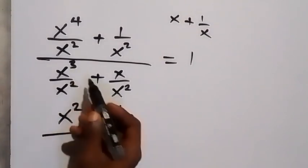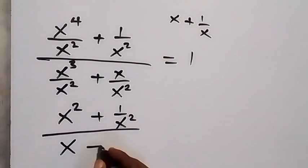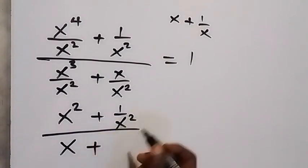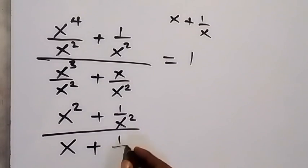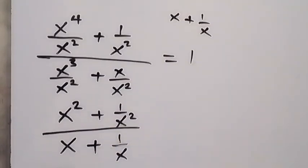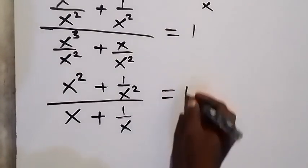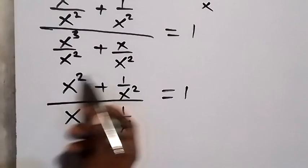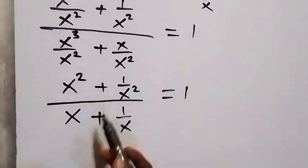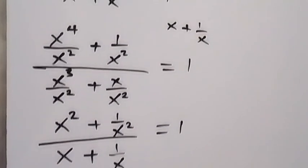When we subtract the powers — 3 minus 2 — that is just 1, so the denominator simplifies to x plus 1 over x. The numerator gives x squared plus 1 over x squared, and the whole expression is equated to 1. We can also write the numerator in terms of x plus 1 over x from what we have here.